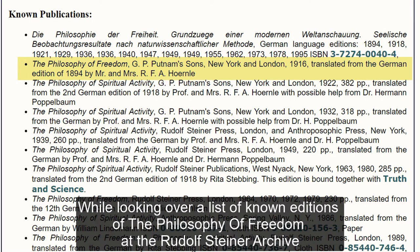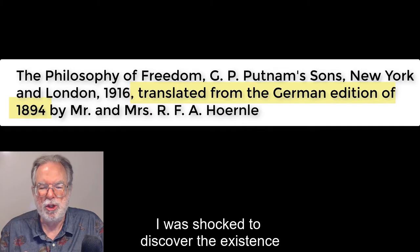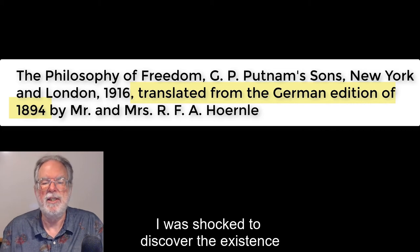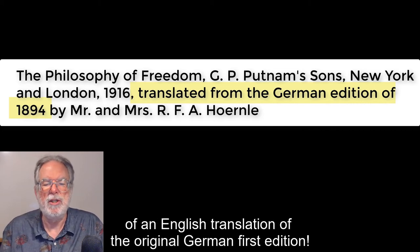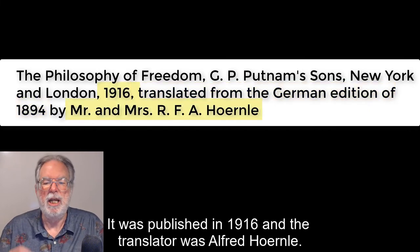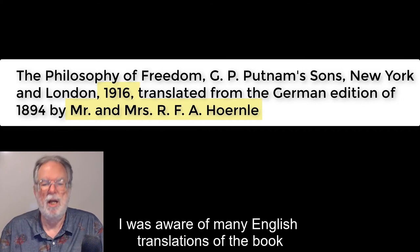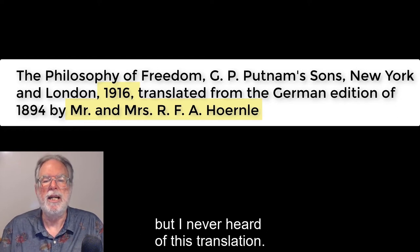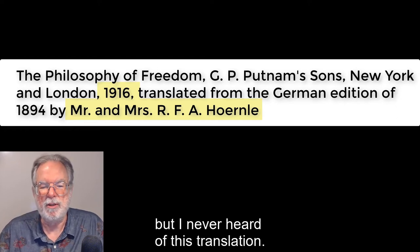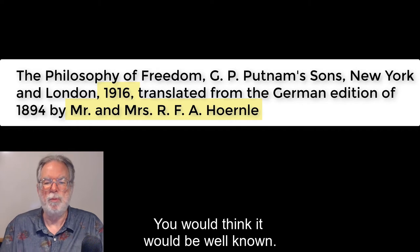While looking over a list of known editions of the Philosophy of Freedom at the Rudolf Steiner Archive, I was shocked to discover the existence of an English translation of the original German first edition. It was published in 1916, and the translator was Alfred Hornell. I was aware of many English translations of the book, but I never heard of this translation. You would think it would be well known.